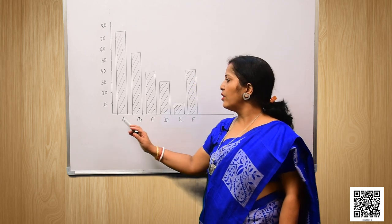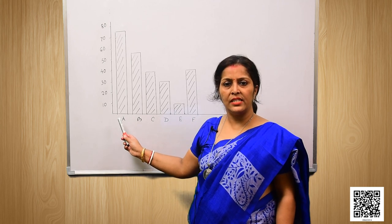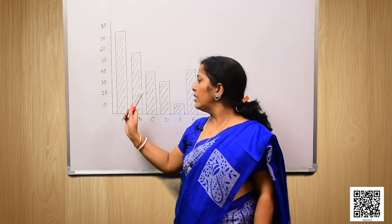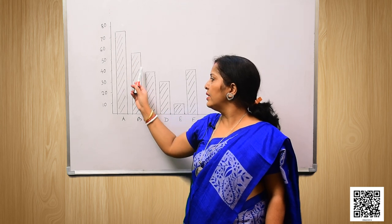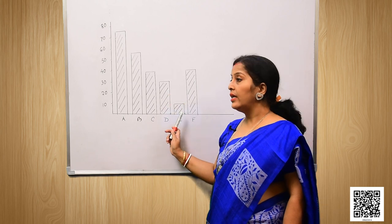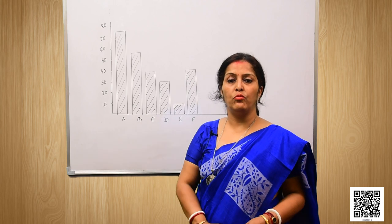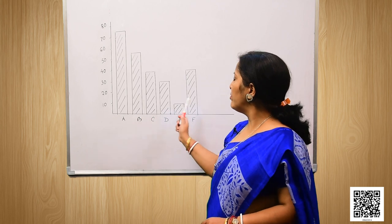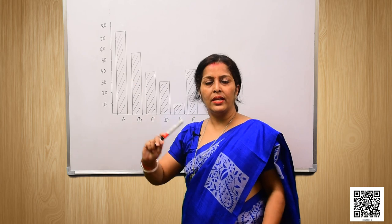Here is the solution for question number three. Along the horizontal line we have drawn the political parties and along the vertical line we have drawn the seats won. Party A won 75 seats, so the bar goes up to 75. Party B won 55, so the bar is up to 55. Party C is up to 37, Party D up to 29, Party E up to 10, and Party F up to 37. From the figure we can easily find that political party A has won the maximum number of seats, that is 75.